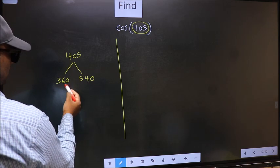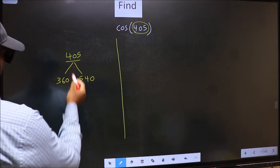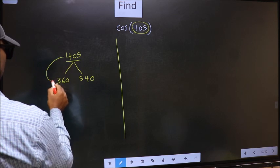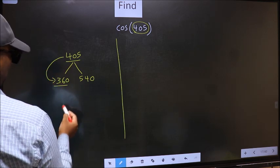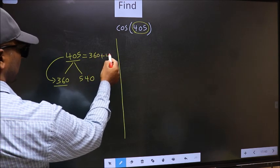Between these two numbers, 405 lies. Next, 405 is close to which number? This is close to 360. So, 405 now should be written as 360 plus 45.